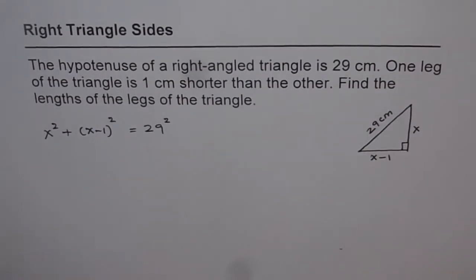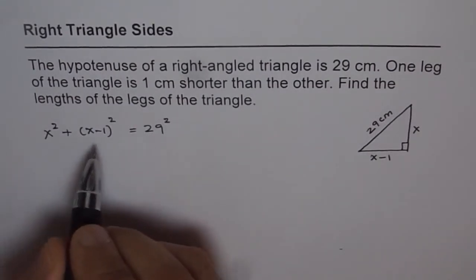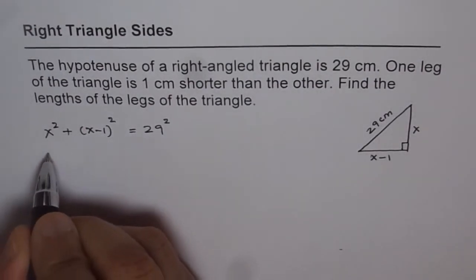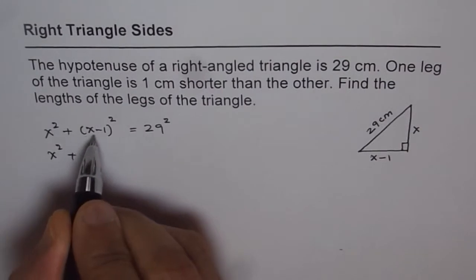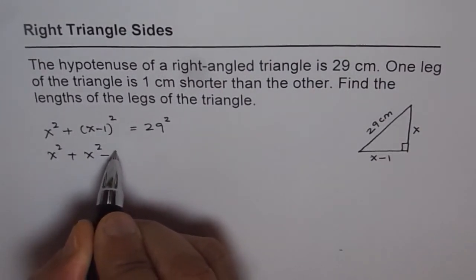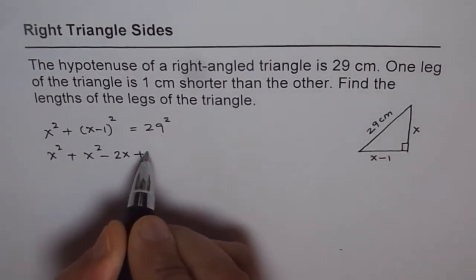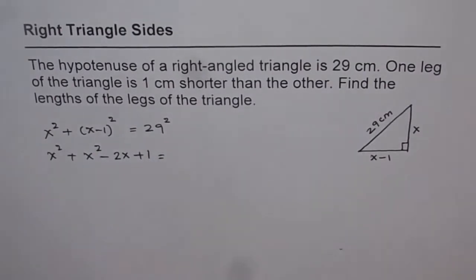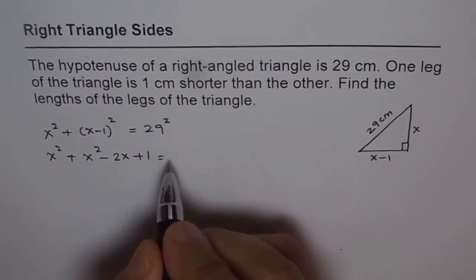And so we can solve this by combining the x terms and isolating them. So we get x squared plus, expanding this we get x squared minus 2x plus 1 equals to 29 squared. Let's find what is 29 squared. 29 squared is equal to 841.